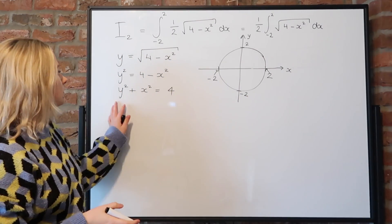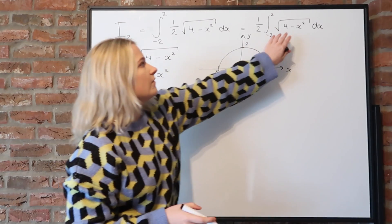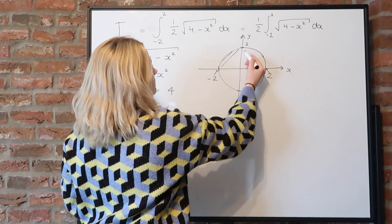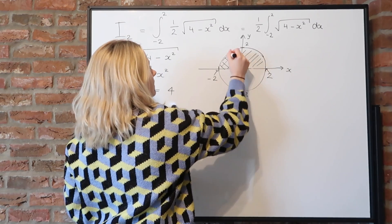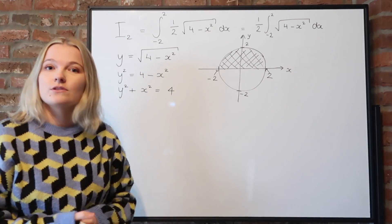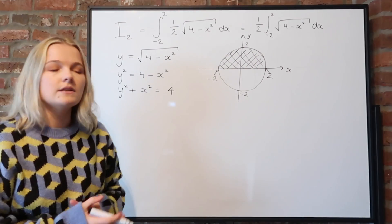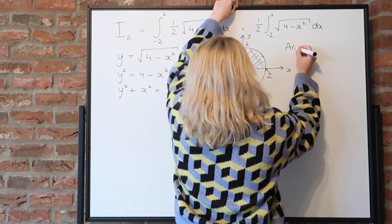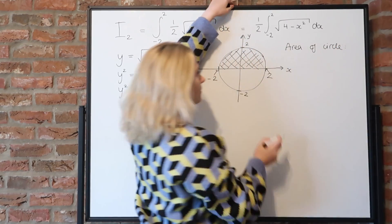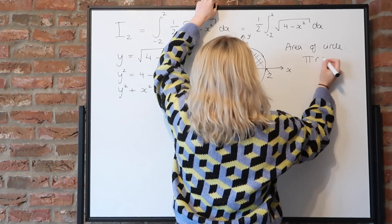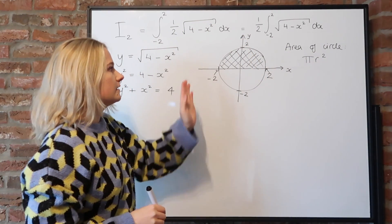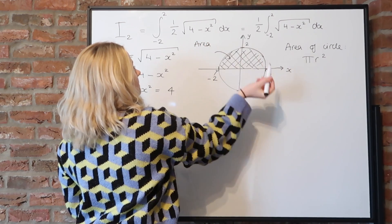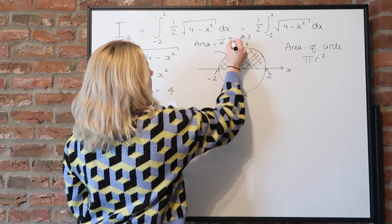When we take the integral of this equation from minus 2 to 2, we're calculating the area under the curve — which is the area of the upper semicircle. The area of a full circle is πr², so the area of the semicircle is one half times πr², which with r = 2 gives one half times π times 4 equals 2π.